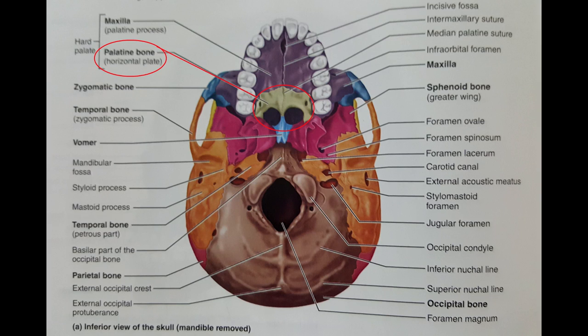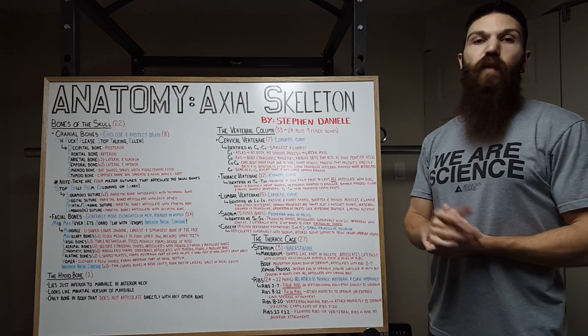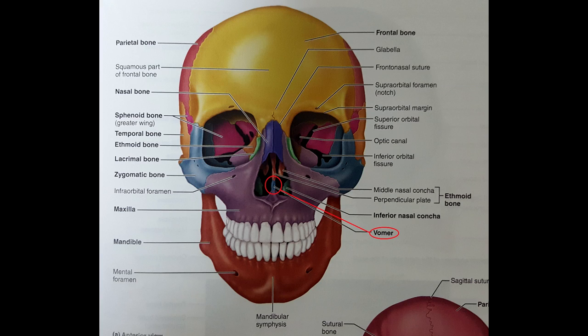Our palatine bones are two L-shaped plates and they form the posterior part of the hard palate and the small part of the nasal cavity and orbital walls. Our vomer — we just have one — is slender and plough-shaped and it forms the inferior part of the nasal septum. And lastly, we have our inferior nasal conchae. We have two — thin, curved bones in the nasal cavity — and they form part of the lateral walls of the nasal cavity.